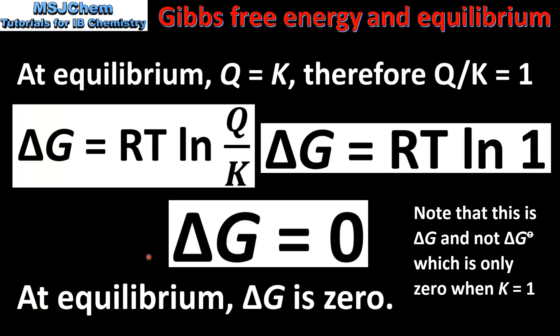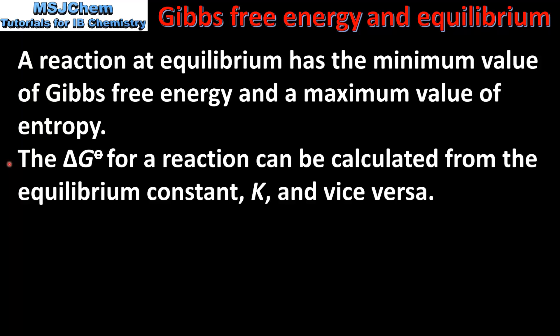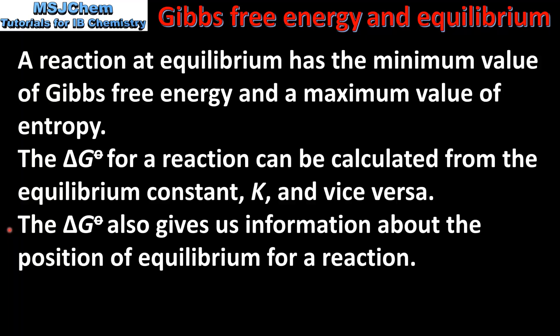To summarise: a reaction at equilibrium has the minimum value of Gibbs free energy and a maximum value of entropy. The standard Gibbs free energy change can be calculated from the equilibrium constant K, and vice versa. ΔG° also gives information about the position of equilibrium. And finally, at equilibrium the Gibbs free energy change for a reaction is 0.